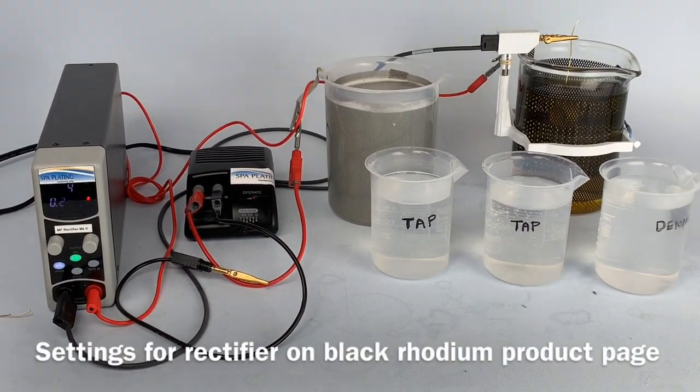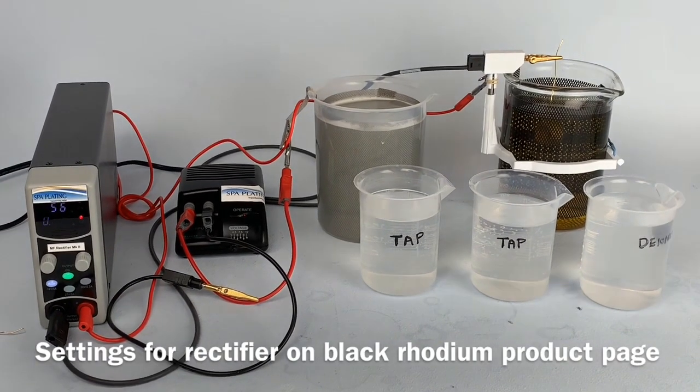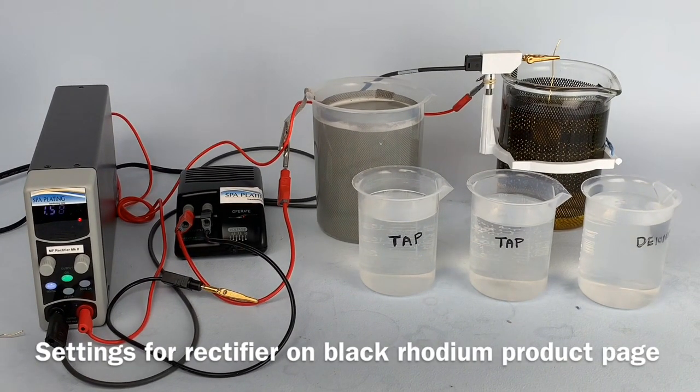To work out the correct settings for the rectifier and the plating time, please go to the black rhodium tank plating solution product page and find the details under the tech specs and calculator tab.